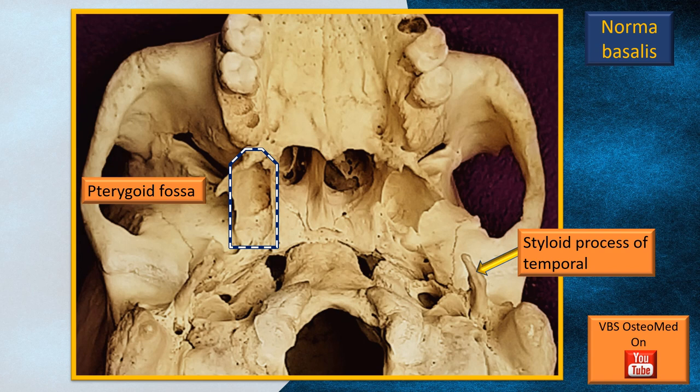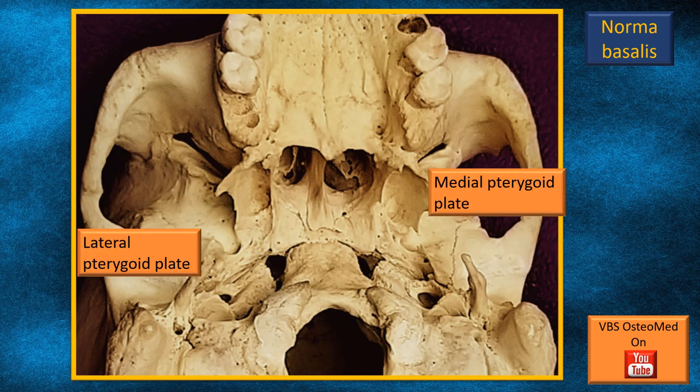The dotted line area is the pterygoid fossa, a component of the sphenoid bone bounded by the medial and the lateral pterygoid plates. On the opposite side, marked by the yellow arrow, there is a horn-like long projection — that's the styloid process of the temporal bone. The two flashing arrows indicate the lateral pterygoid plate and the medial pterygoid plate; the gap in between is the pterygoid fossa. Anteriorly, the fossa is closed; posteriorly, the fossa is open.